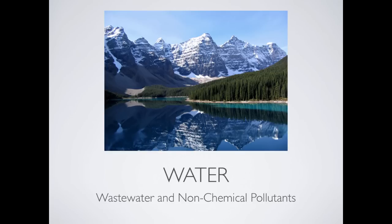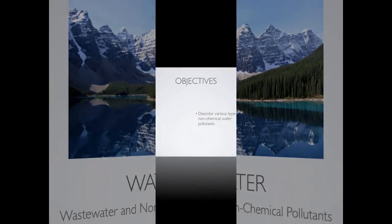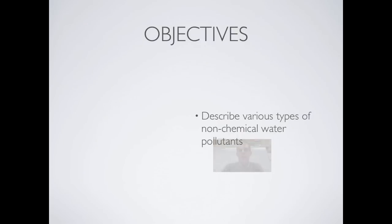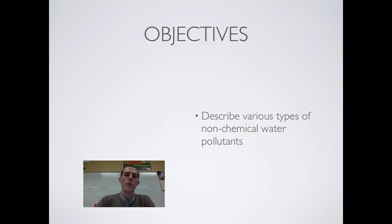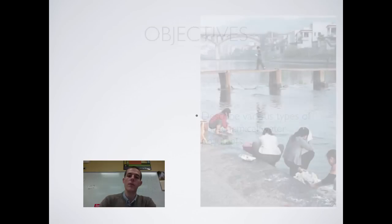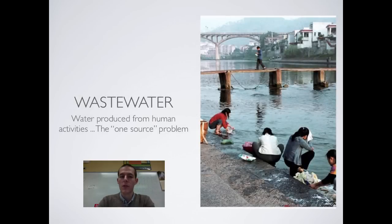Let me get you some objectives. By the end of this video, you should be able to describe various types of non-chemical water pollutants. For the first couple videos in the series, we talked about water and ways that humans use water. For the next couple videos, we're going to be talking about ways that humans harm sources of water. Today, we're going to be looking at some non-chemical pollutants.